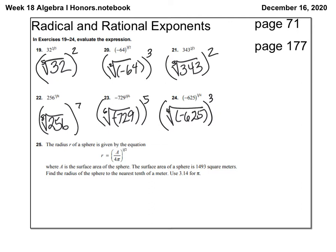The fifth root of 32: 1 to the fifth is 1, 2 to the fifth is 32. So the fifth root of 32 is 2. 2 squared is 4, so that's the answer for that one. The next one: square root of negative 64. Can I multiply a number by itself and get negative 64? No. So this one is not possible.